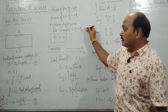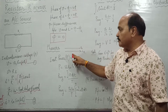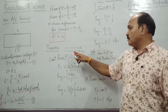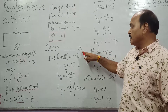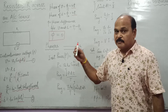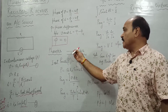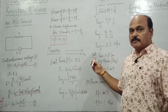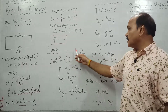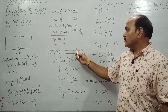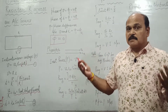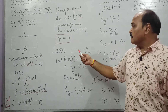Had the voltage been lagging behind current by a certain angle, the voltage phasor would be drawn in the clockwise direction at that same angle. With respect to a reference phasor — which could be i or V — we draw the other phasor. If the other phasor leads, it is drawn anti-clockwise; if it lags, it is drawn clockwise. Right now there is no phase difference, so both phasors are parallel. This phasor representation is very important and all circuit analysis in this chapter will be done using phasor analysis.